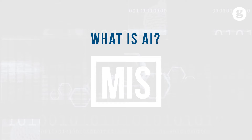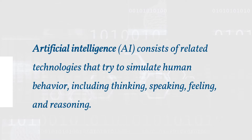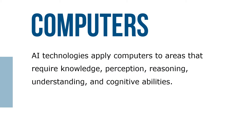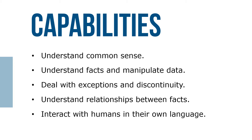Artificial intelligence, or AI, consists of related technologies that try to simulate human thought and behavior, including thinking, speaking, feeling, and reasoning. AI technologies apply computers to areas that require knowledge, perception, reasoning, understanding, and cognitive ability. To achieve these capabilities, computers must be able to understand common sense, understand facts and manipulate qualitative data, deal with exceptions and discontinuity, understand relationships between facts, and interact with humans in their own language.